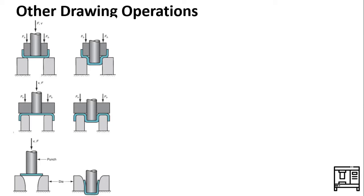Welcome to the second lecture of week 7. We have been discussing the deep drawing operation of the sheet metal working process. In the last lecture we discussed some fundamentals of deep drawing and parameters required to determine the feasibility of a particular deep drawing operation. In this lecture we are going to see some specialized conventional drawing operations, and then move towards some other sheet metal processes performed on conventional presses with metallic and rubber toolings.